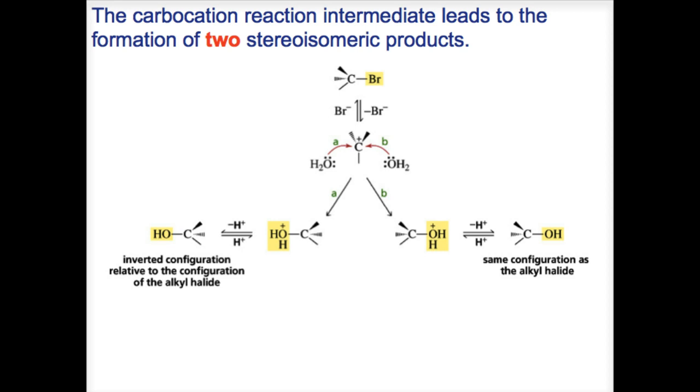Here is a slide illustrating carbocation reaction intermediate that leads to the formation of two stereoisomeric products. This helps explain the experimental evidence that in the substitution of a chiral alkyl halide, a racemic mixture of product is obtained. If the halogen is bonded to an asymmetric carbon in the alkyl halide, when it undergoes an SN1 reaction, two stereoisomers are formed.